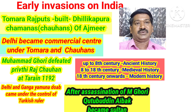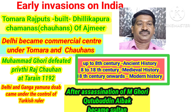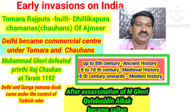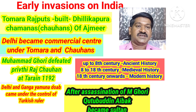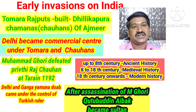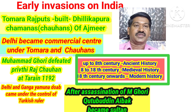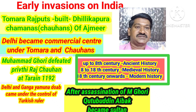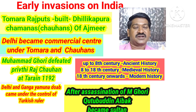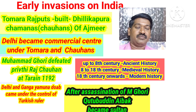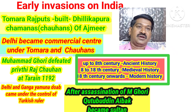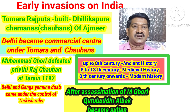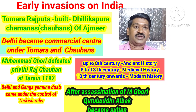History was divided into three periods: ancient history, medieval history, and modern history. Up to the 8th century, this period is called ancient history or the ancient period. From the 8th century to the 18th century, this period is called medieval history or the medieval period. From the 18th century onwards, that period is called modern history or the modern period.